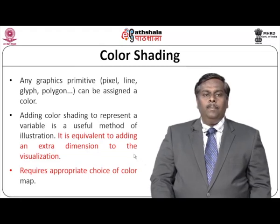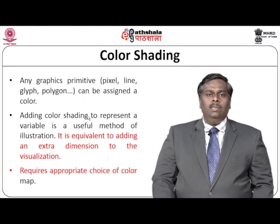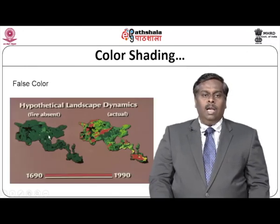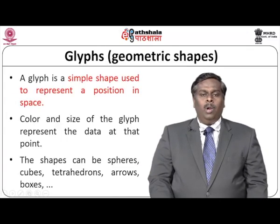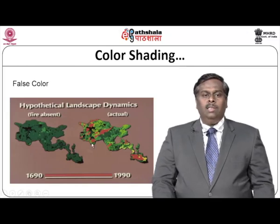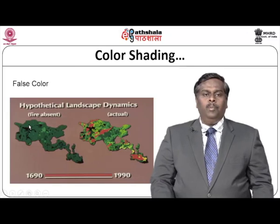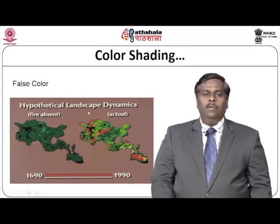Color shading is another important technique. When using color shadings, you identify different shades of color to represent a proportion or a variable's value, and the appropriate choice of color is very important. For example, in a hypothetical landscape dynamics visualization highlighting the presence of fire, a darker shade of red clearly indicates whether fire is present or not. If an improper shade of color is used, the information is suppressed and the visualization is not effective. Proper choice of color matters a lot for color shading.